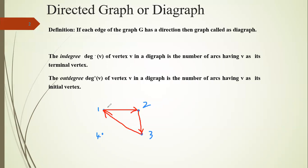In-degree means the number of arcs having V as its terminal vertex. For vertex 1, it is the initial point in one arc and the terminal point in another arc. So the number of arcs having vertex 1 as the terminal vertex gives the in-degree, which is 1. Out-degree is the number of arcs having V as the initial vertex. For vertex 1, only one arc has vertex 1 as the initial point, so the out-degree of vertex 1 is 1.